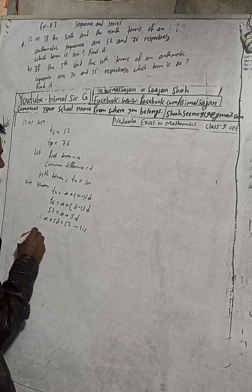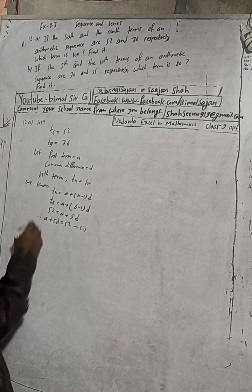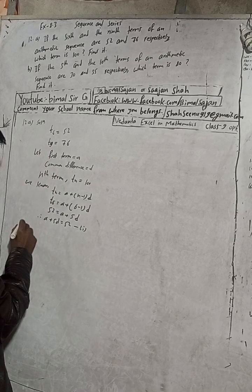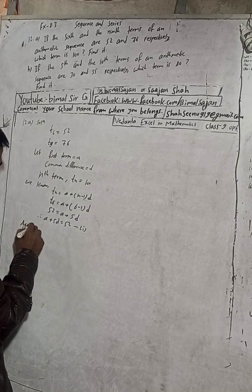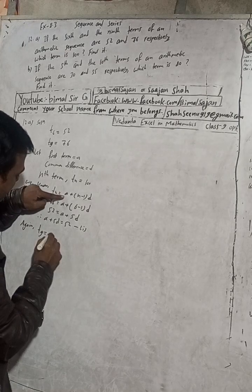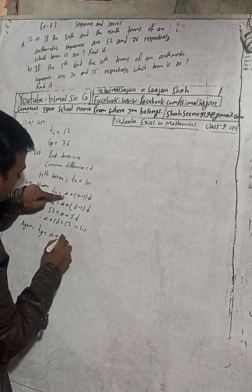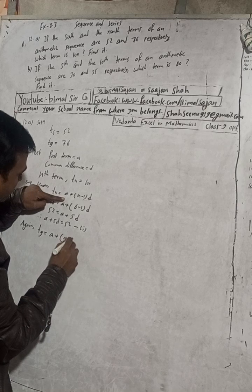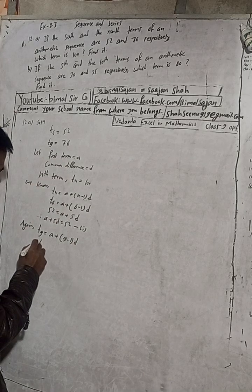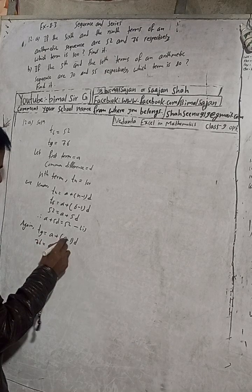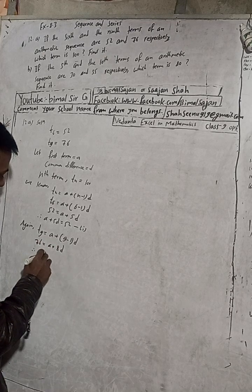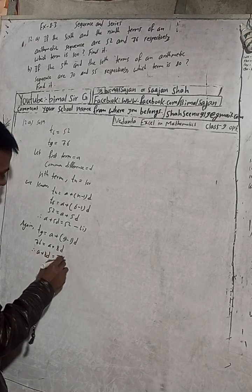Now find equation 2. Put n equal to 9 in the formula. So t9 equals a plus (9 minus 1)d. t9 is 76, so 76 is equal to a plus 8d. Therefore a plus 8d is equal to 76. This is equation 2.